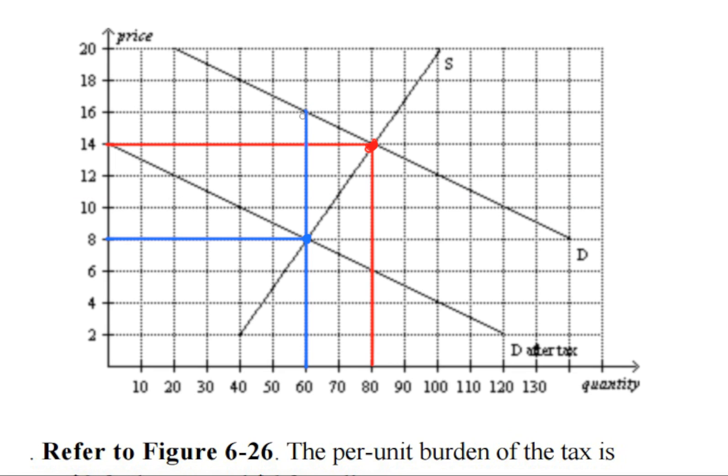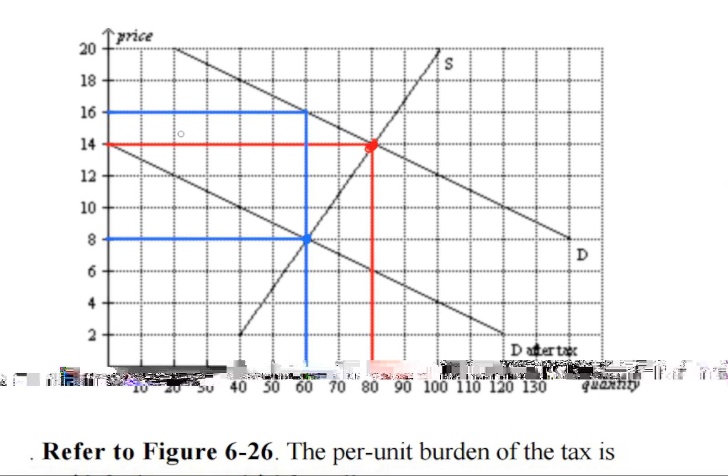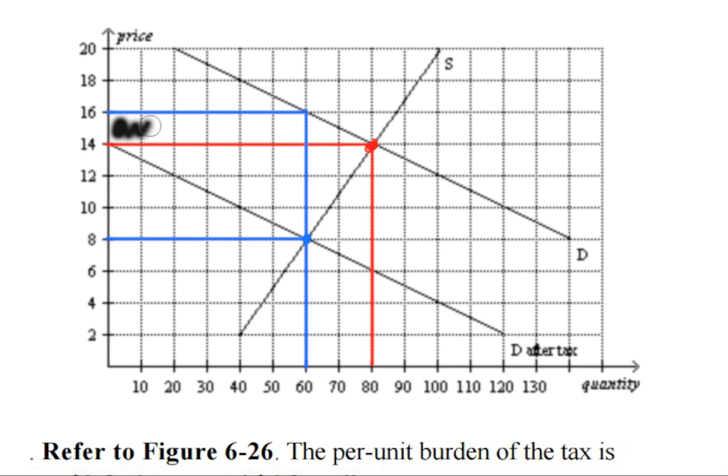So, you want to draw all the way to the y-axis. Now, right here, this area represents the per-unit tax burden on the buyers.